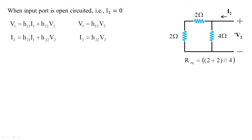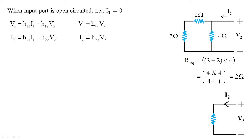Now I calculate the equivalent resistance of this circuit. The two 2-ohm resistors are in series, giving 4 ohms, and this 4 ohms is in parallel with 4 ohms. Looking from the output port side, R_equivalent = 2 ohms. I replace the circuit with this 2-ohm equivalent, where v2 and i2 are present, giving v2 = 2·i2.